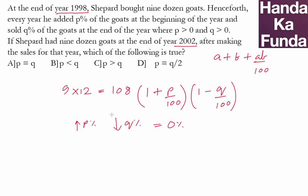So from 98 to 2002, the net change is zero percent. So every year the net change is also zero percent by the formula. What is the net change? A plus B plus AB by 100.